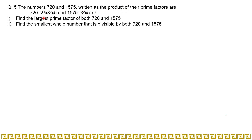The question states that the numbers 720 and 1575, written as the product of their prime factors, are given. We need to: first, find the largest prime factor of both 720 and 1575, and second, find the smallest whole number that is divisible by both 720 and 1575. The question has already provided the prime factorizations of both numbers.